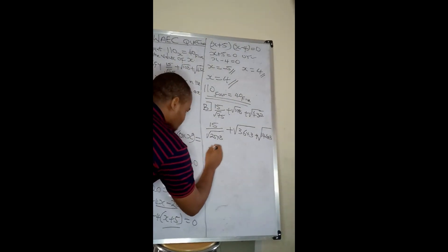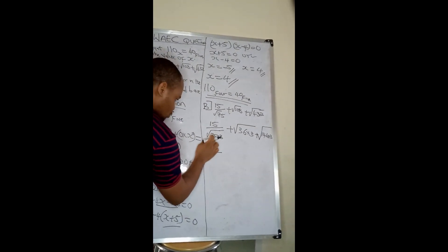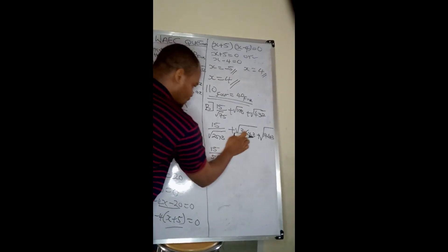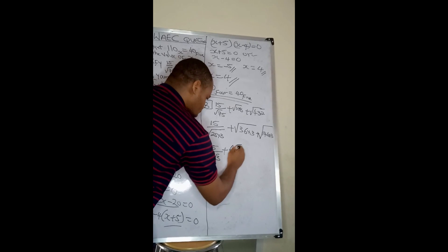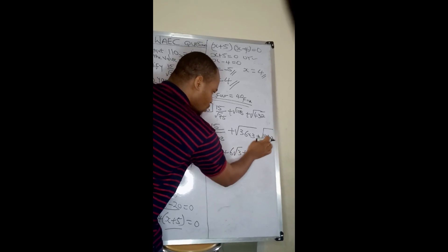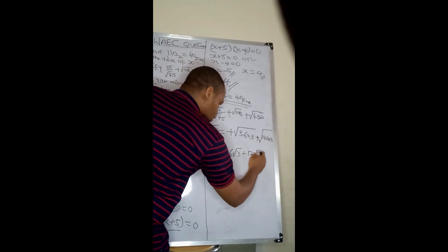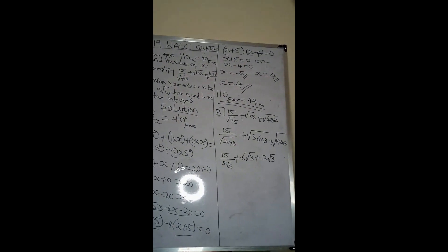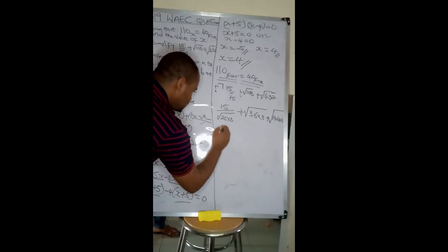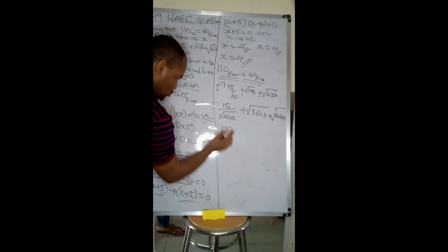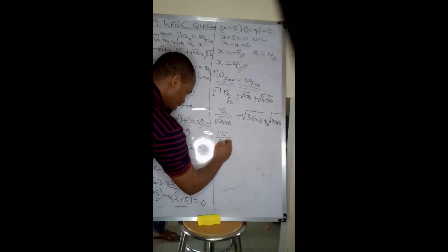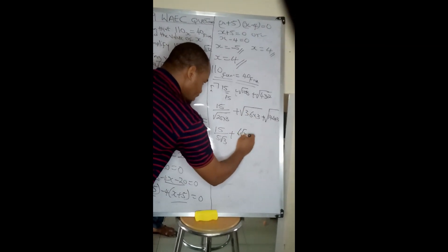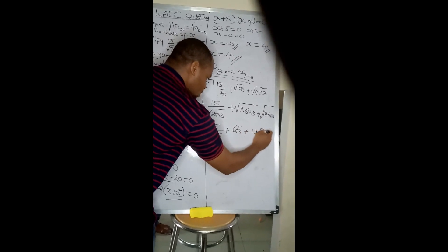Let's simplify this. I'll have 15 all over square root of 25 is 5 root 3, plus square root of 36 is 6 root 3, plus square root of 144 is 12 root 3. I've been able to simplify everything to root 3.